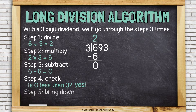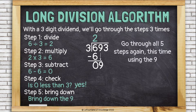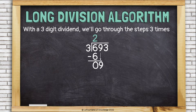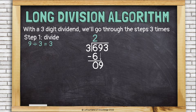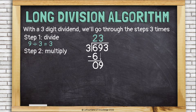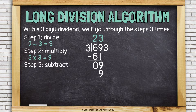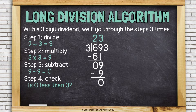Bring down the nine to sit right next to the zero, and now start over again using the nine. Divide nine divided by three, which is three — and remember, every time you divide, it goes on top. Step two, multiply: that three times three, the divisor, is nine, written underneath the other nine. That sets me up for subtraction: nine minus nine is zero. Check: is zero less than three? Yes.